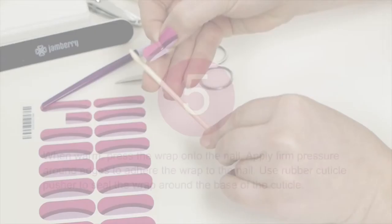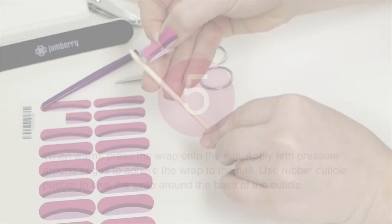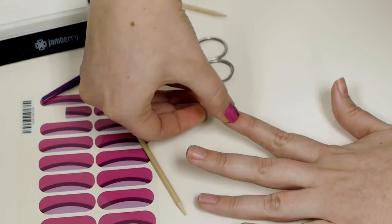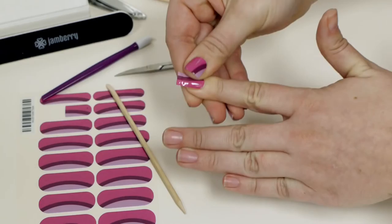Once the nail wrap is warm, press it to the nail. Apply firm pressure, especially around the edges. Use your opposite thumb or an orange stick to press the wrap onto your nail. Concentrate on sealing the edges. Make sure it isn't touching any skin, as this will make it more likely to lift.